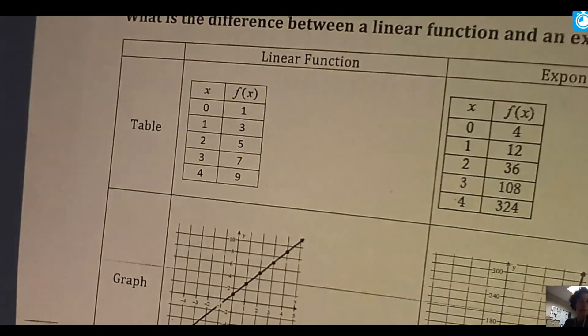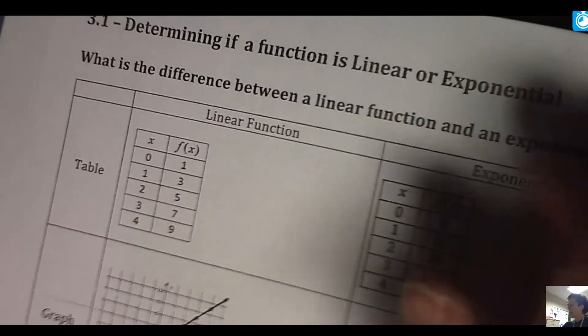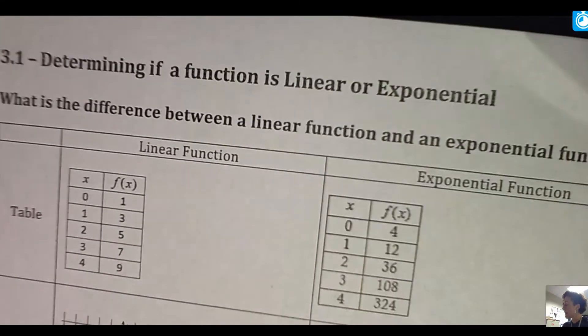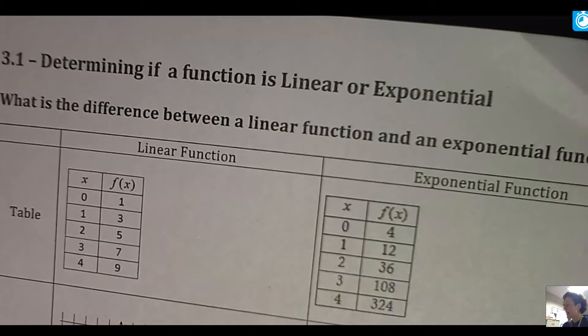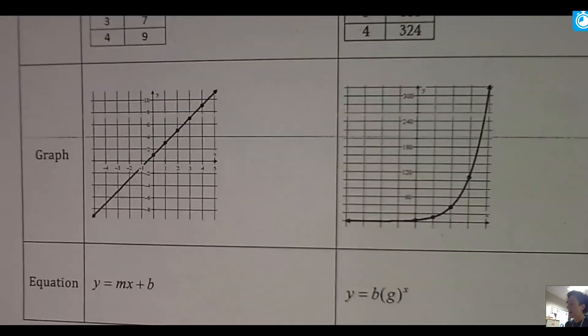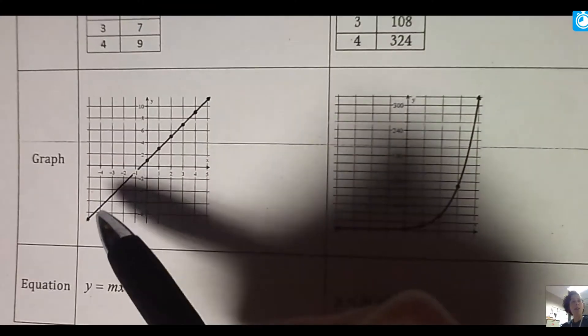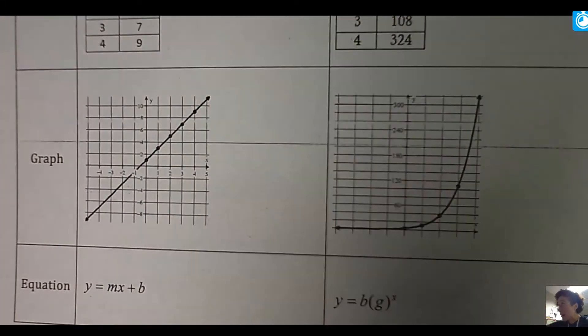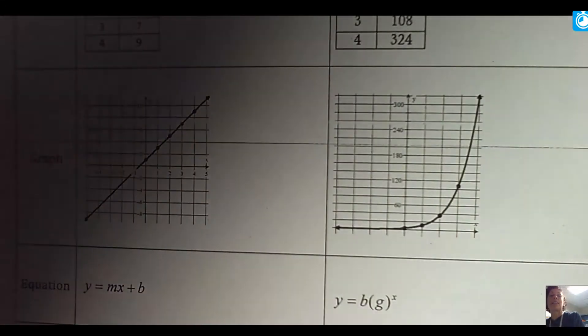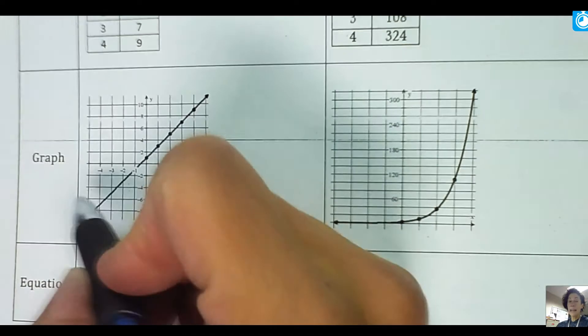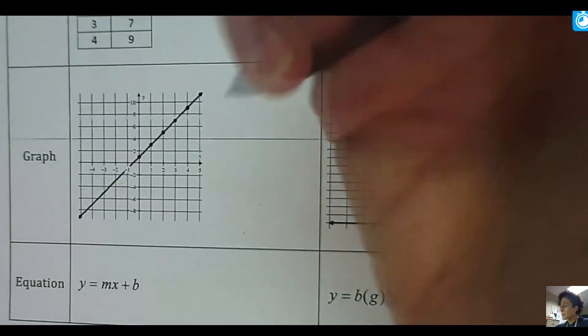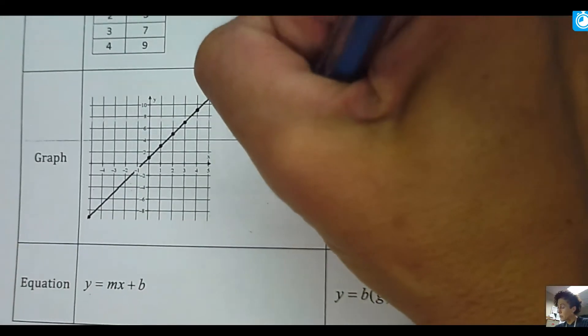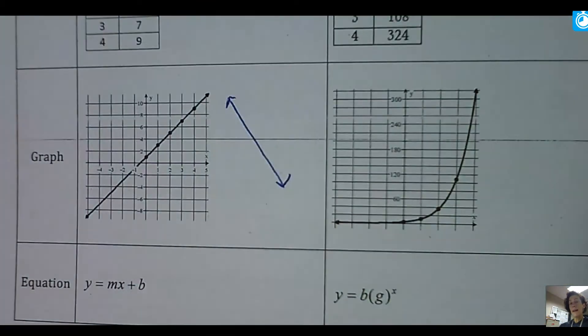So let's begin. In our first section, we are going to discuss the difference between linear and an exponential function. We're going to start with the graph. A linear function, this is just a line. It gets its name because it's a line. Linear has the word line in it. Lines can go uphill and then they can also go downhill, so we just want to make sure we draw that in there. Remember, you can always pause.